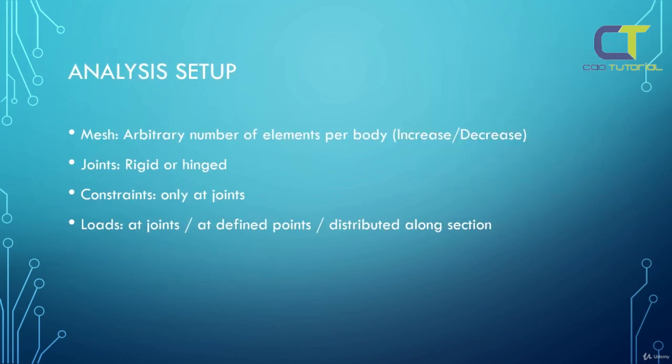Regarding analysis setup, when we create a mesh we can have an arbitrary number of elements per body and can increase or decrease those numbers, while with truss elements we had only one element per body. Joints can be rigid or hinged with beams, while with truss elements we only have rigid joints.